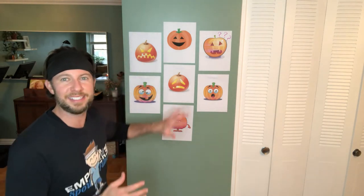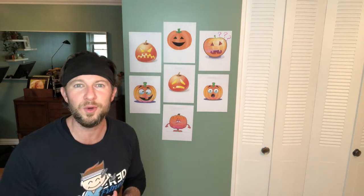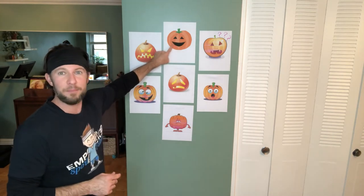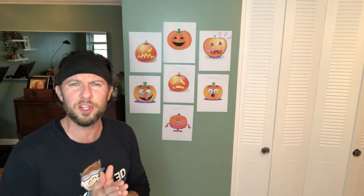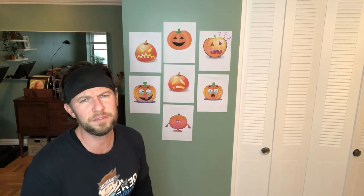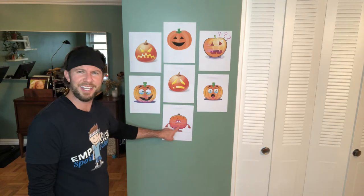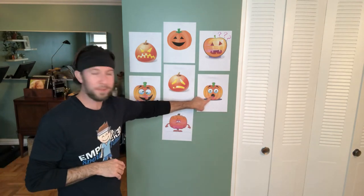What you're going to want to do at home is have your athlete step up to the board and ask them: can you point to the pumpkin that looks happy? See if your athlete can point to the happy pumpkin. Can you point to the pumpkin that looks sick, doesn't feel very well? We've got our sick pumpkin right here. What about our scared pumpkin? Which pumpkin looks terrified? We've got our scared pumpkin right there.